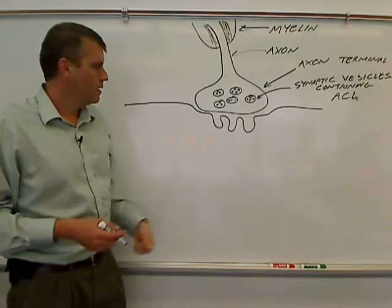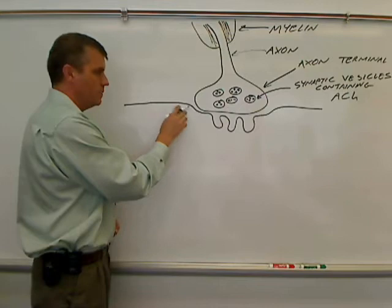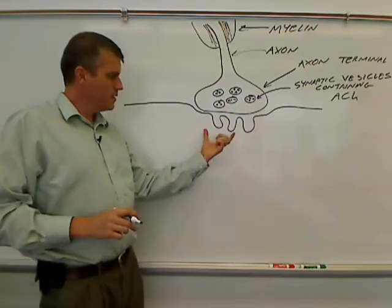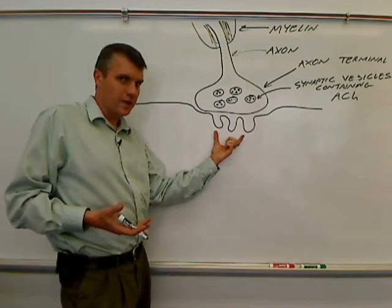The muscle side, this is the sarcolemma of the muscle cell, the membrane of the muscle cell. And this part of the sarcolemma is usually called a motor end plate.